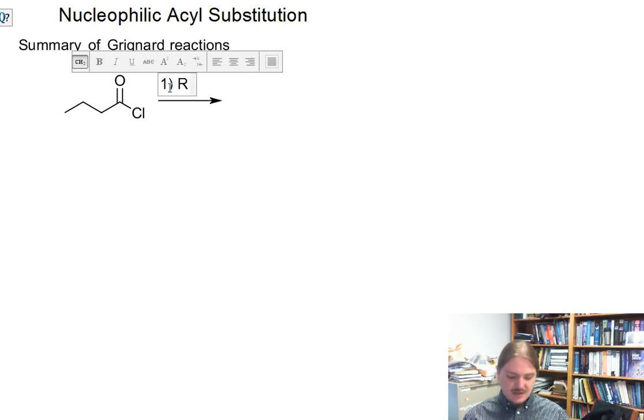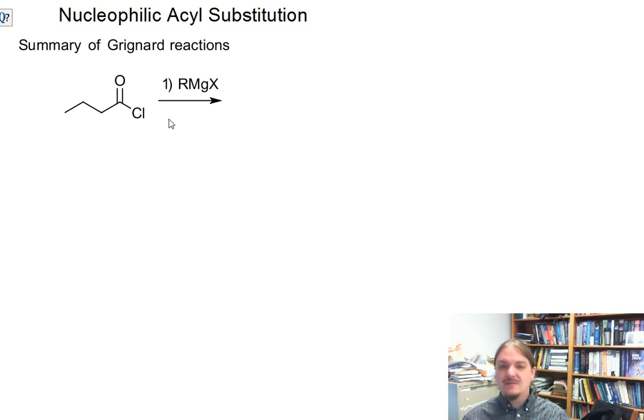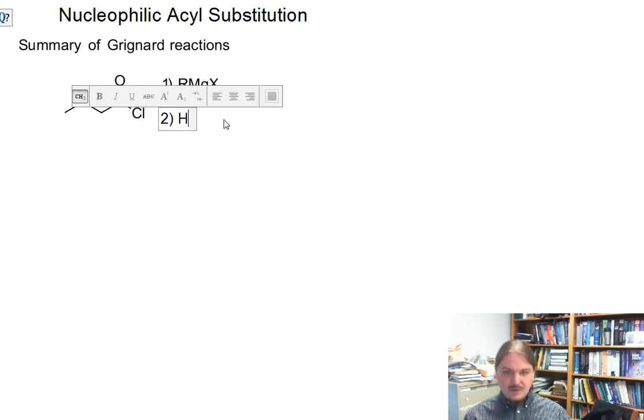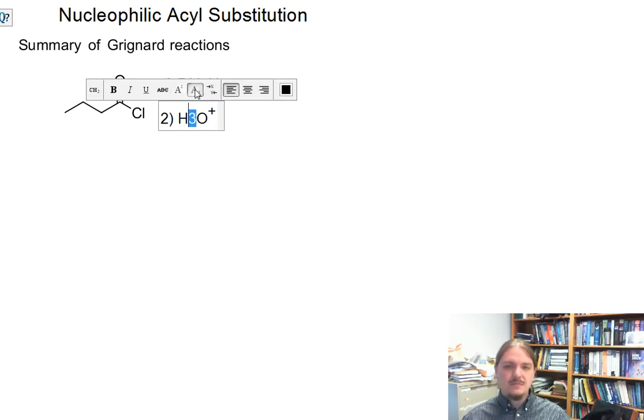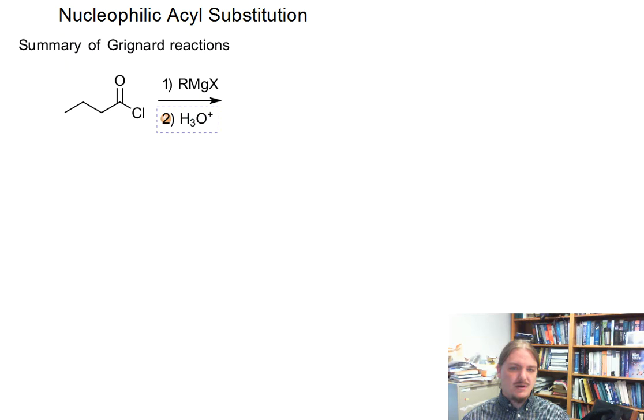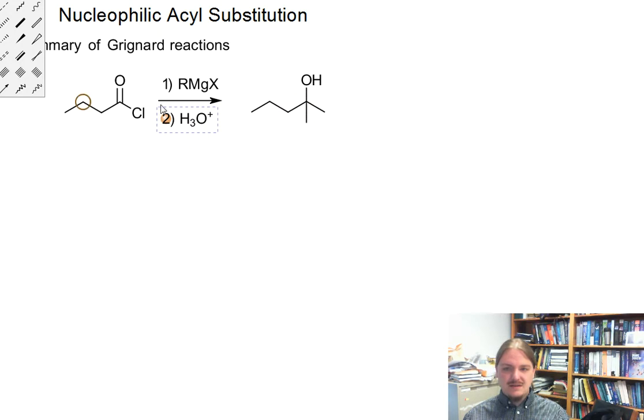The overarching theme here is that many of the carboxylic acid derivatives react twice with Grignard reagents to produce tertiary alcohols, though some are not reactive because of acid-base reaction considerations, and of course amides and nitriles have to be different.